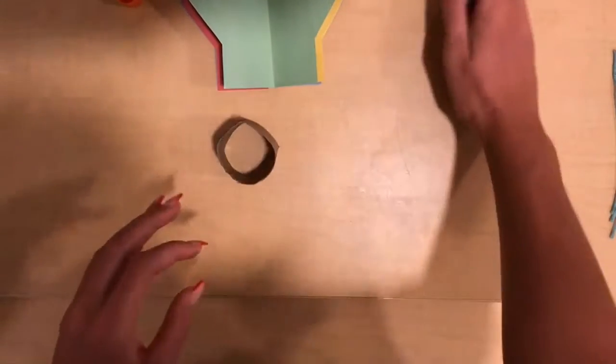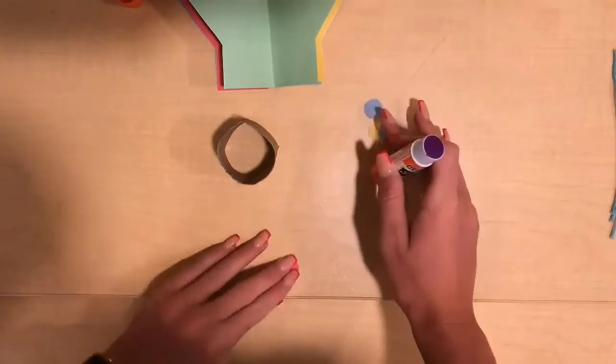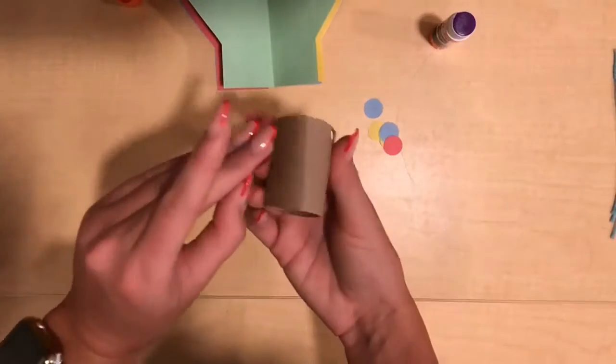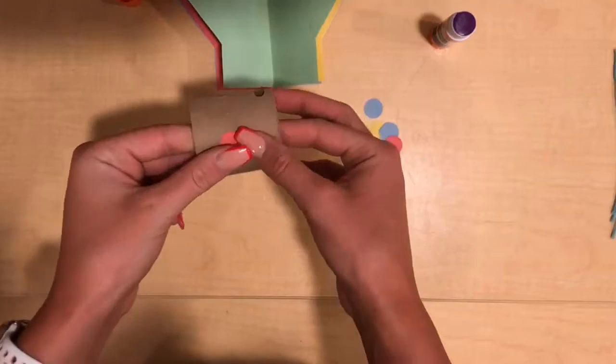Now we will take the base of the hot air balloon and begin gluing each individual small circle to the base of the hot air balloon for a little decoration.